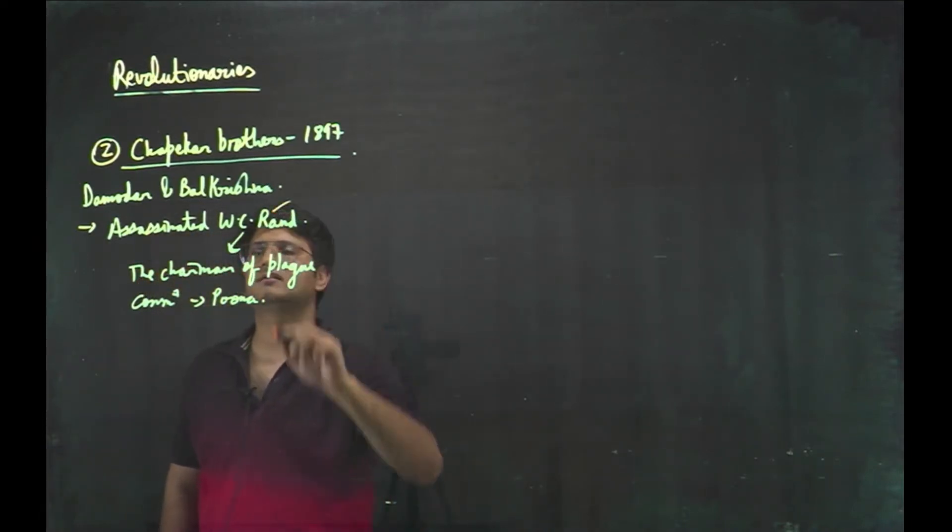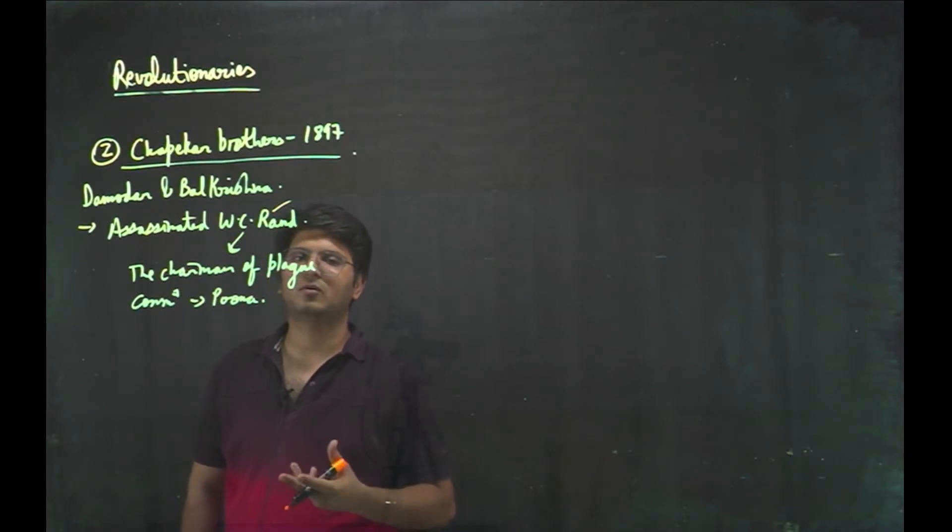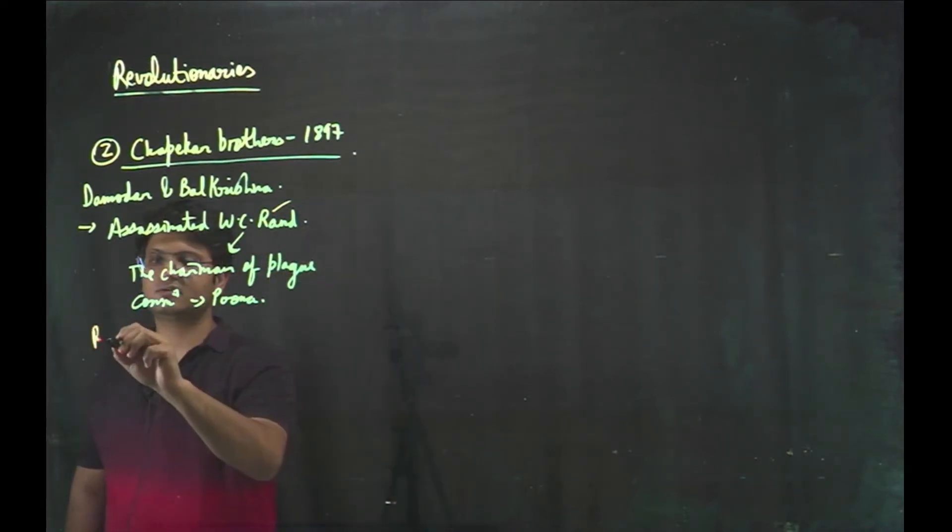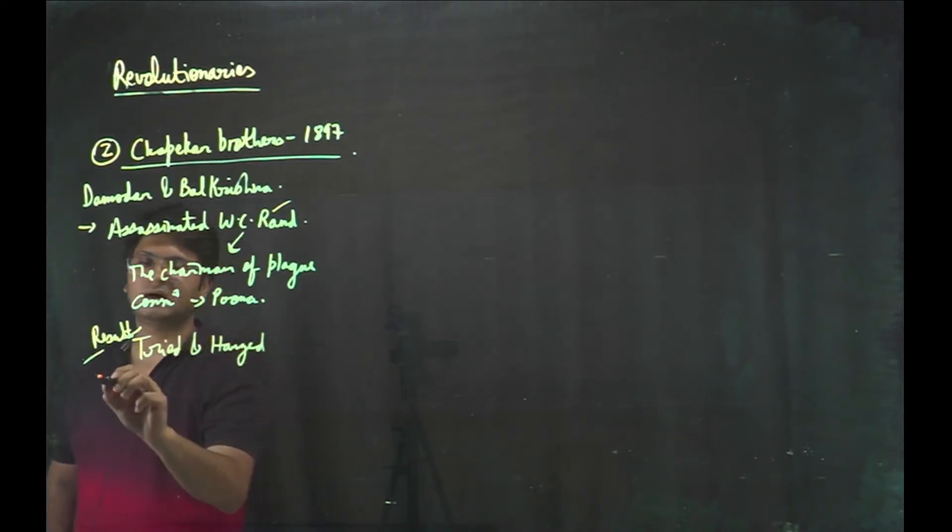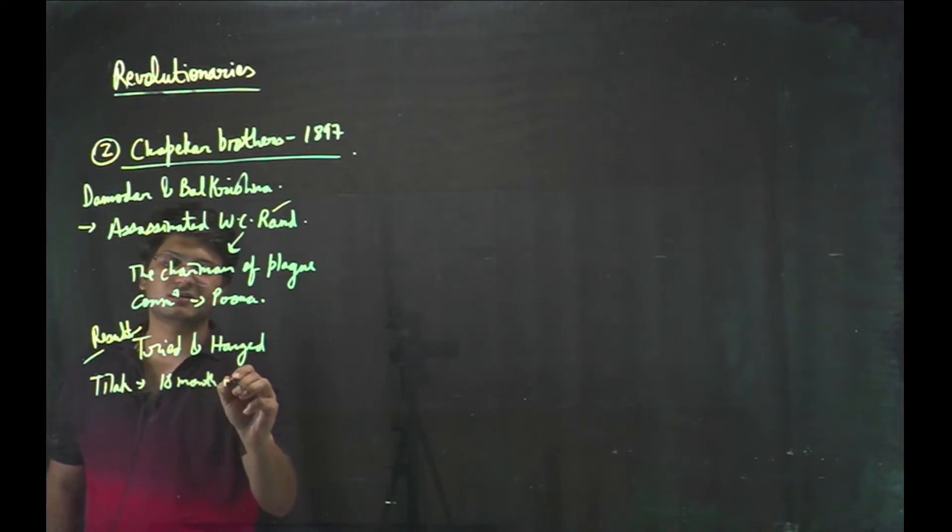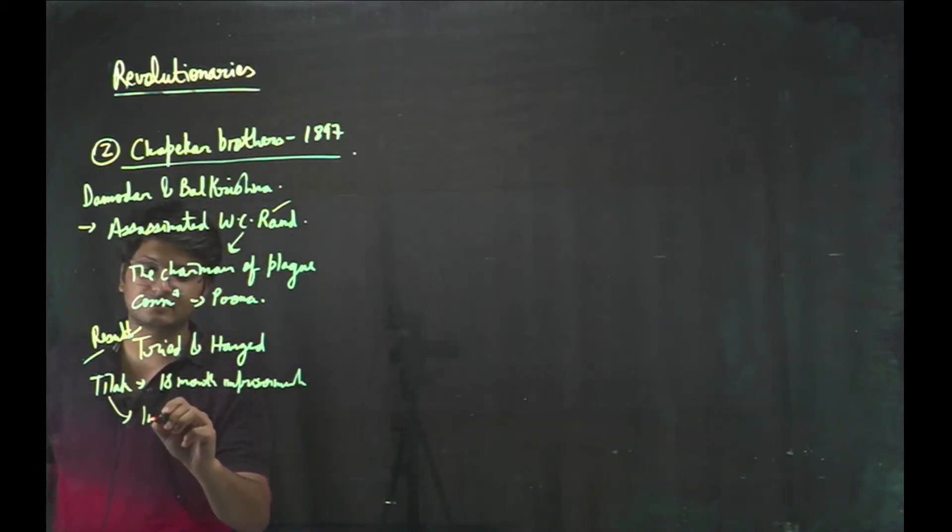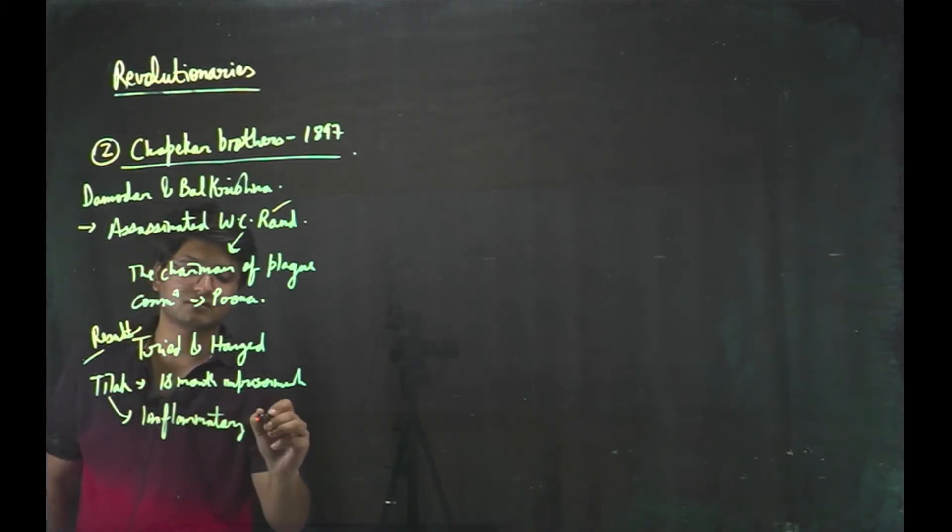The brothers assassinated W.C. Rand and this was the first assassination, political assassination of Europeans. Result was that both the brothers were tried and hanged. And Bal Gangadhar Tilak was sent to 18 months imprisonment. He was imprisoned because of his inflammatory articles in Maharashtra and Kesari.